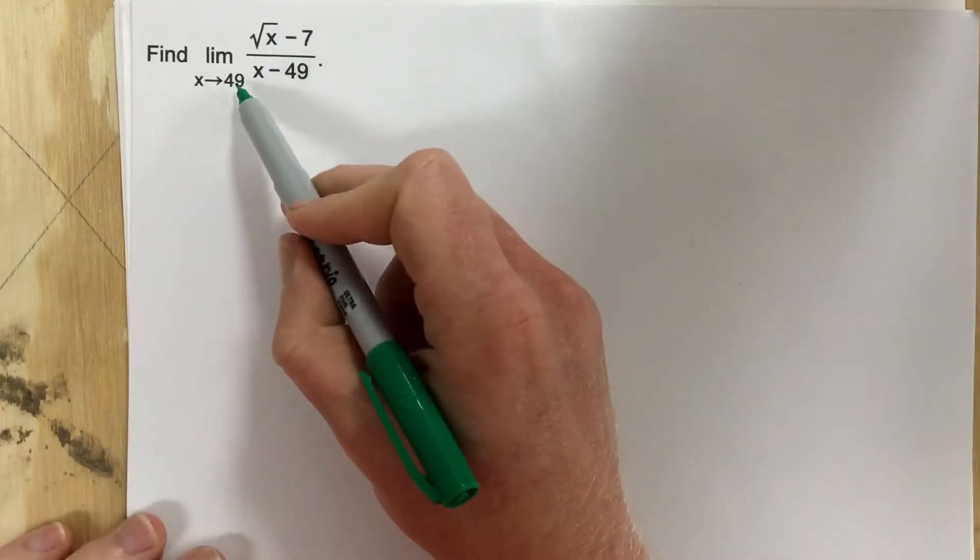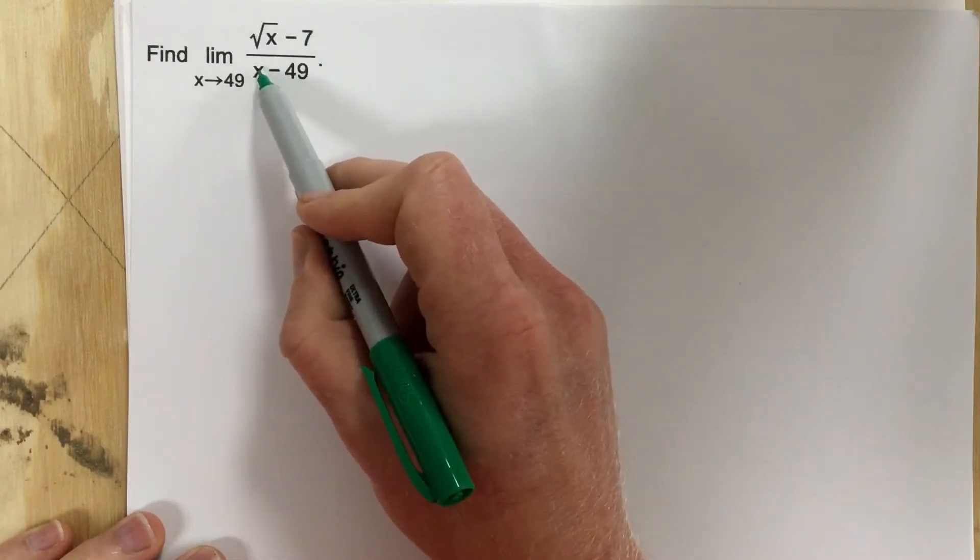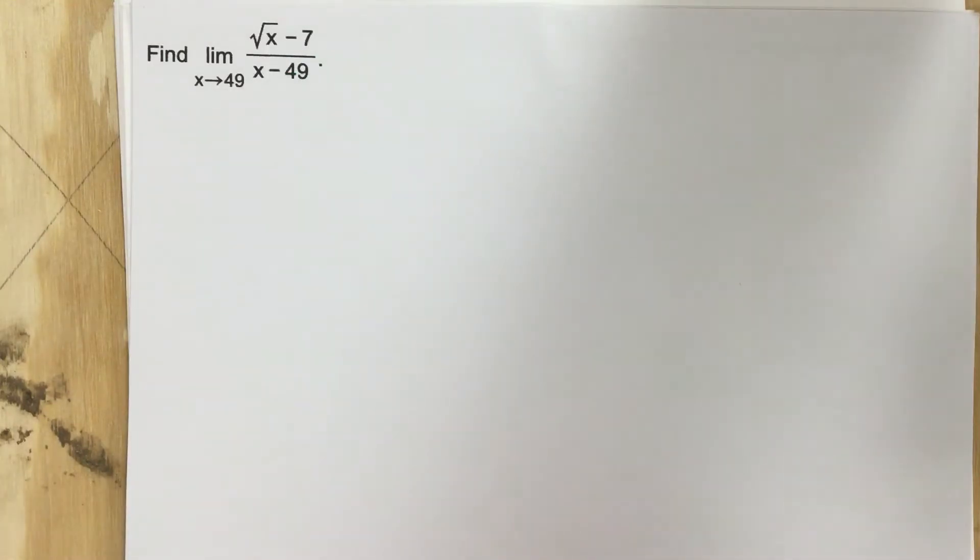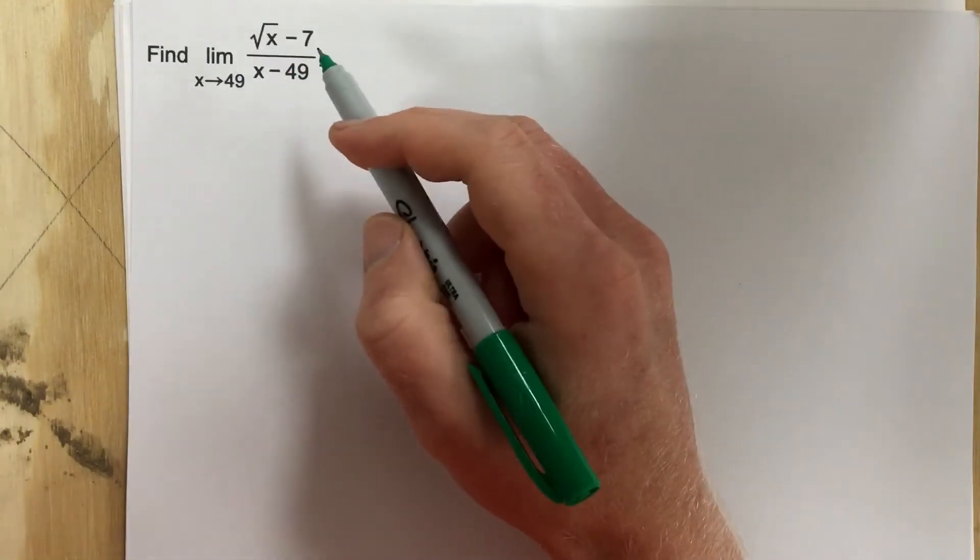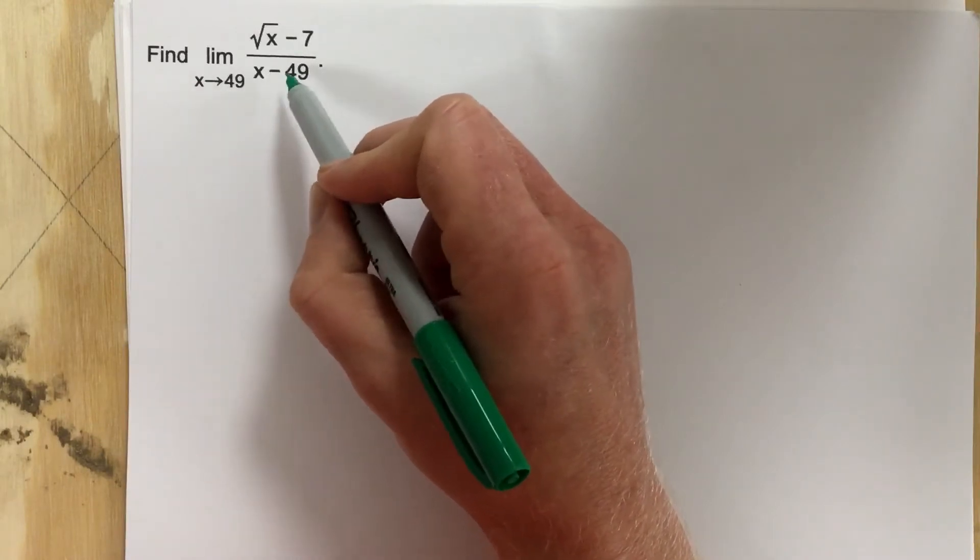I'm going to try to plug in 49 to start to see if this is defined at 49. I plug in 49, I get 49 minus 49 on the bottom. That's a 0. I cannot divide by 0, so I can't just plug it straight in and find the limit.